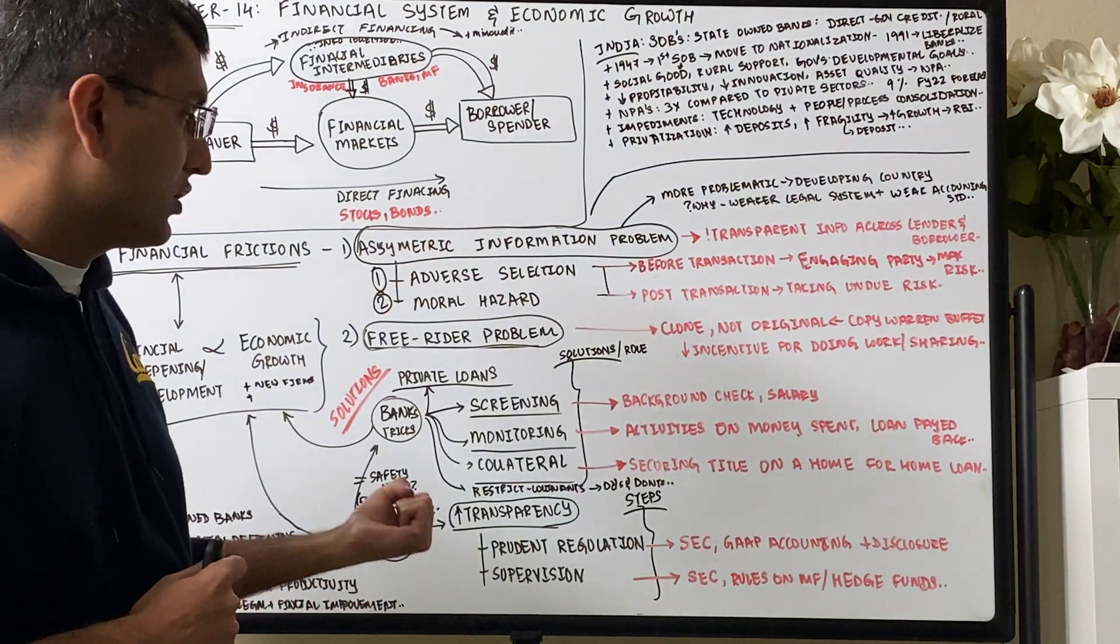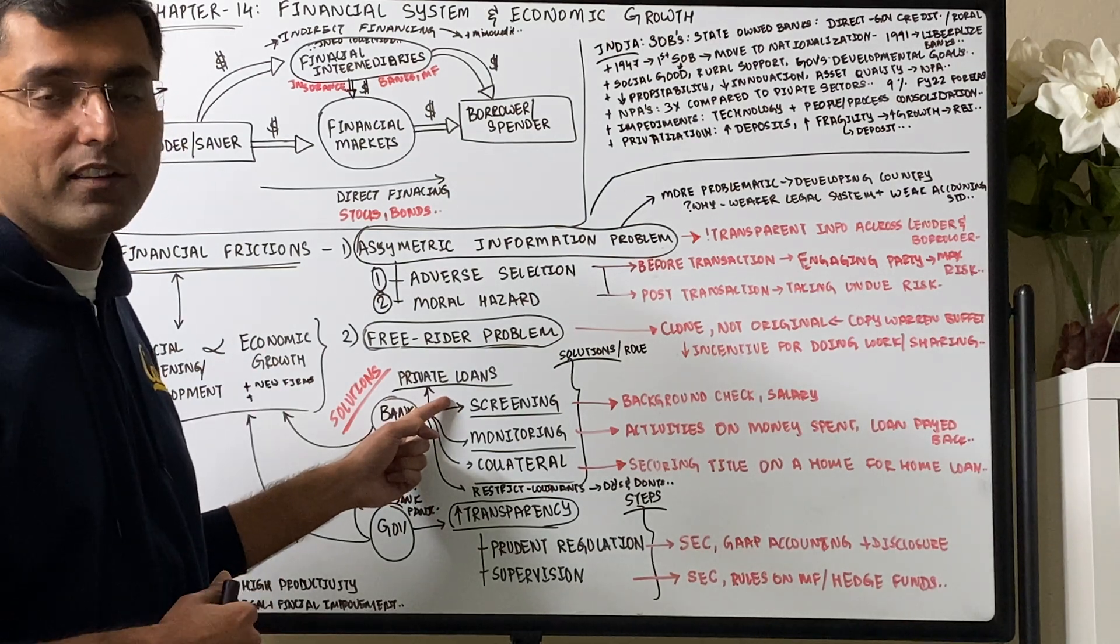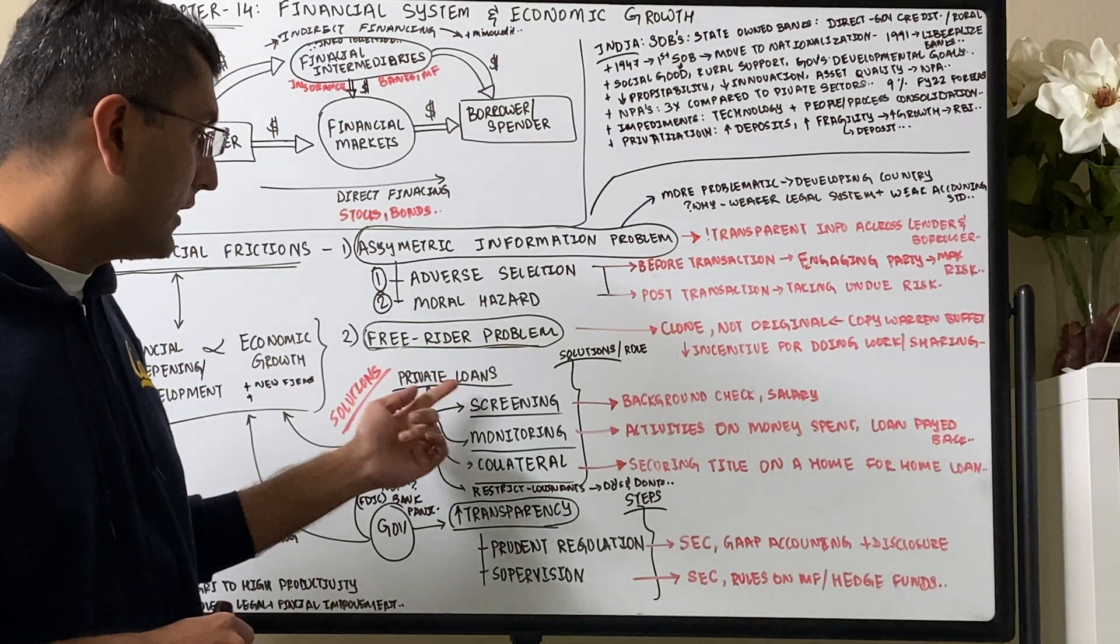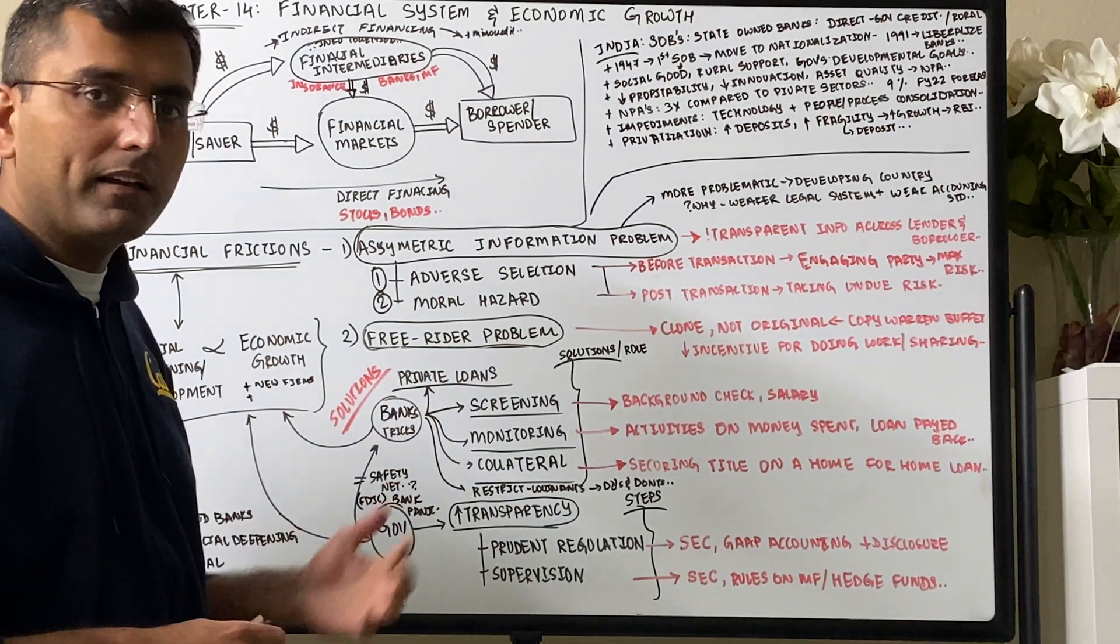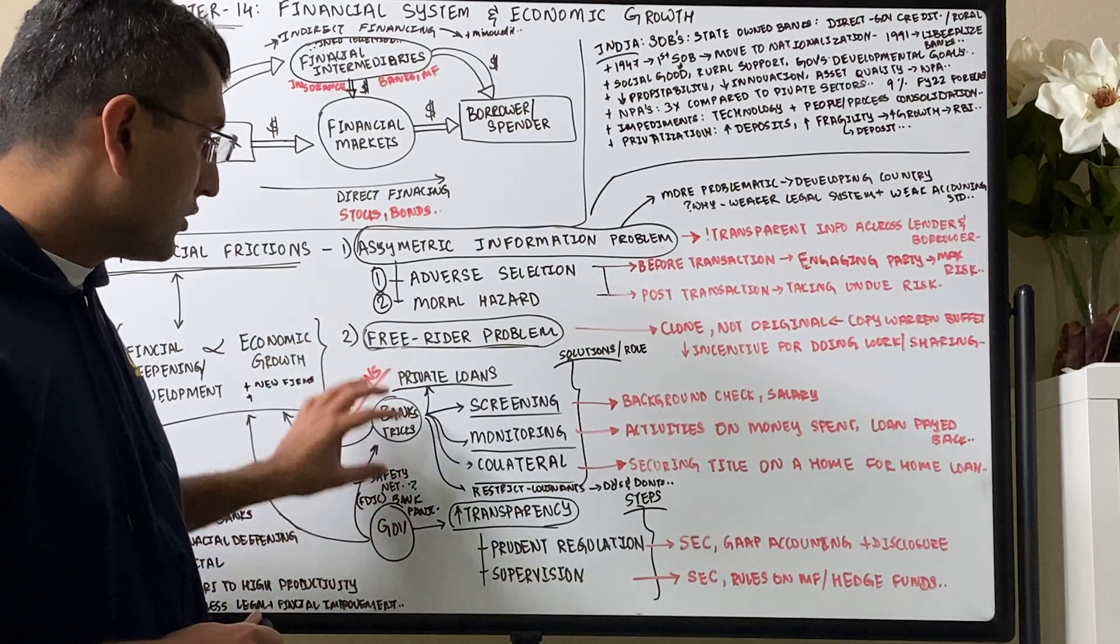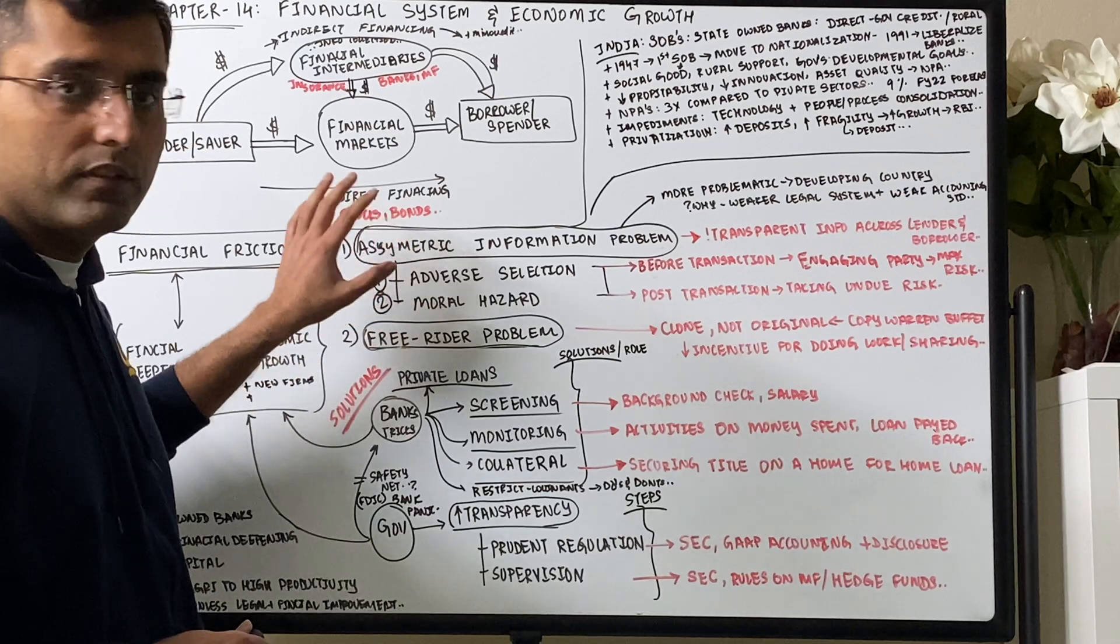There are various ways in which you can remove the asymmetric information problem by collecting that information, not sharing that information. Like Warren Buffett could just say, hey, I'm not going to share all of this research. I'll just make major transactions. Then the price has already gone up by the time he's bought all of those shares. These are the things that financial intermediaries can do to solve these two problems on free rider and asymmetric information.